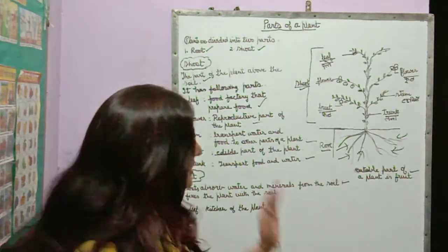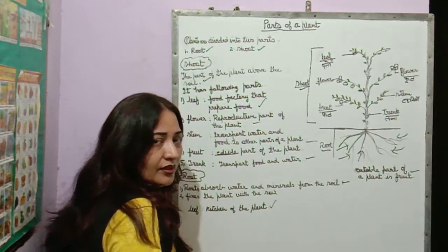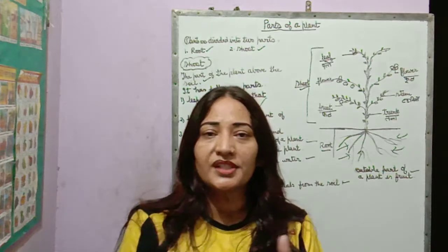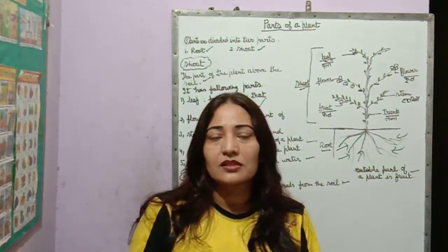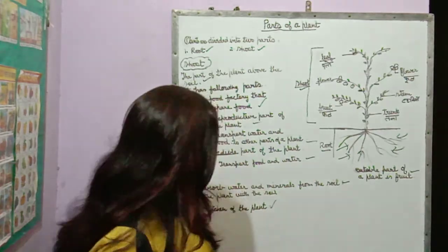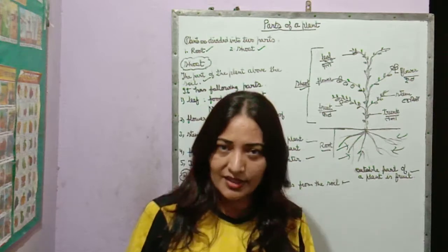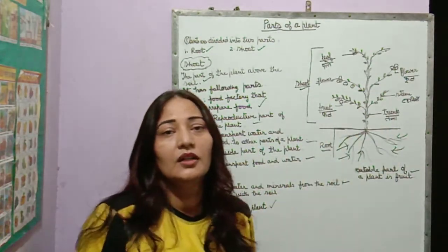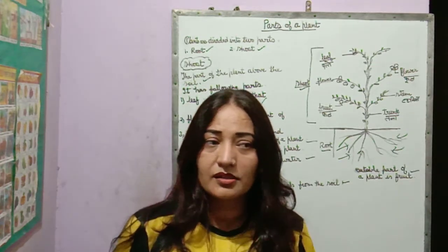That is one function of roots. Second function: roots fix the plant in the soil. If roots were not fixed in the soil, plants would come out with water or wind. So roots fix the plant firmly in the soil. Students, write these definitions and your scoring will be good. Knowledge is the biggest weapon in the world. Thank you.